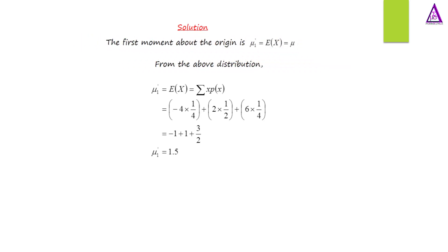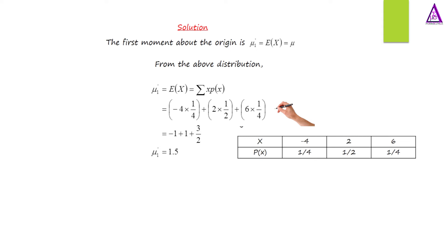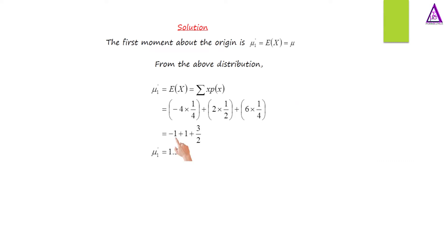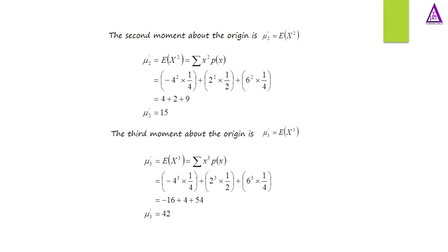Solution: The first moment about the origin is the expected value of x, which equals the summation of x times p(x). This equals negative 4 times 1/4, plus 2 times 1/2, plus 6 times 1/4, which gives us negative 1 plus 1 plus 3/2. Therefore, the first moment about the origin is 1.5.